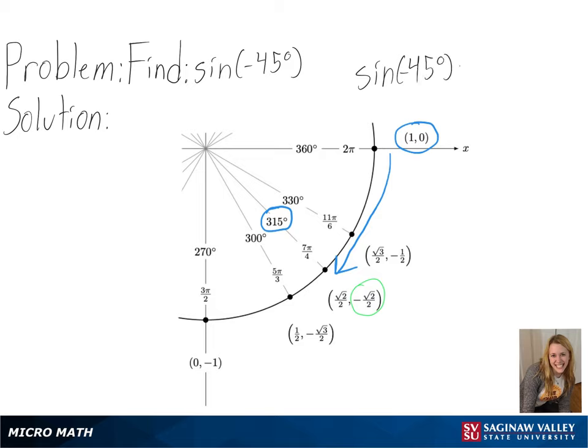So for sine of negative 45 degrees, we get negative square root of 2 over 2 as our final answer.